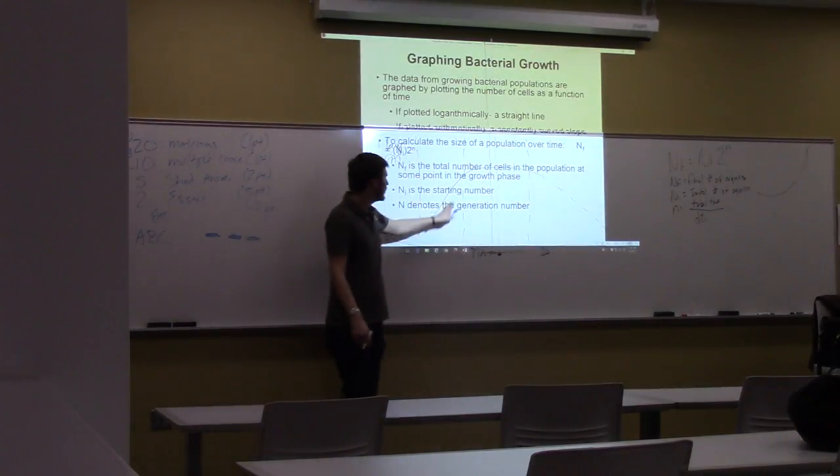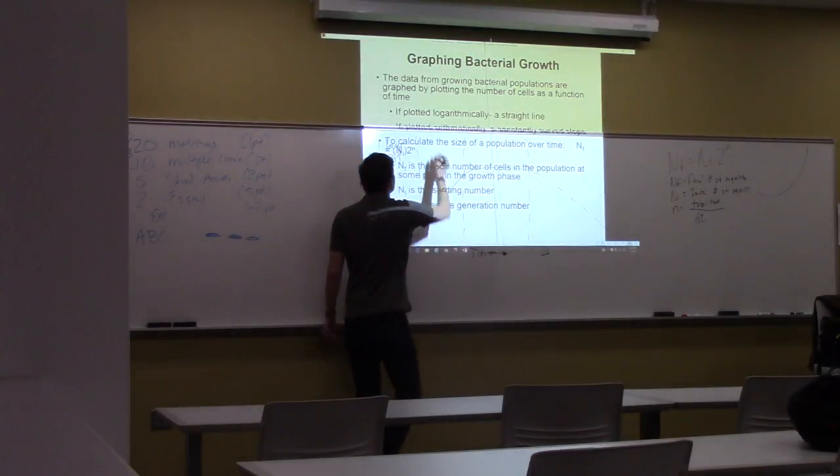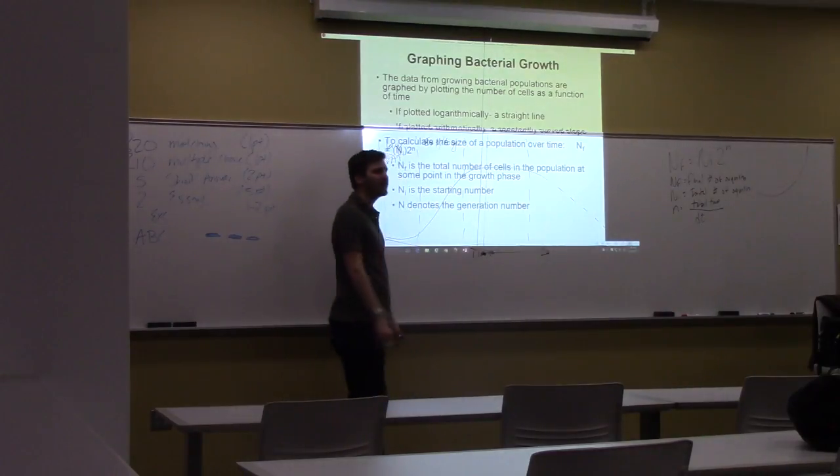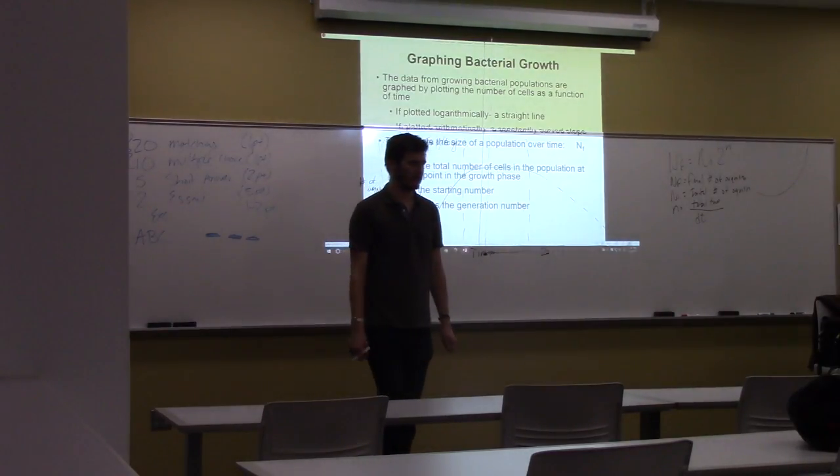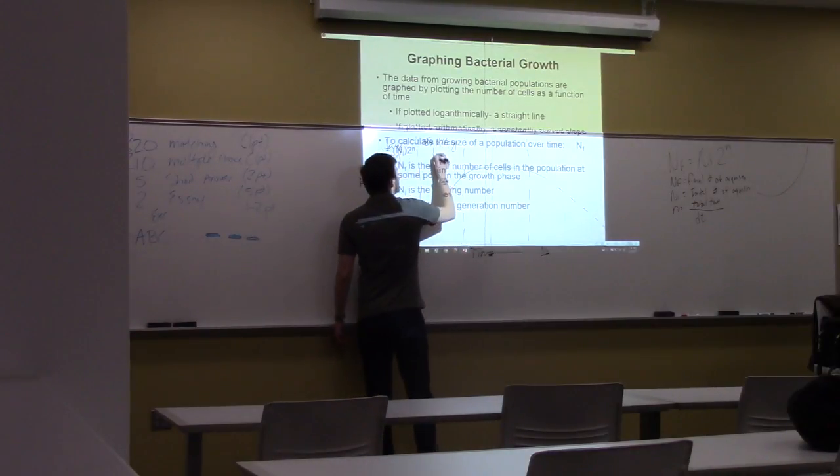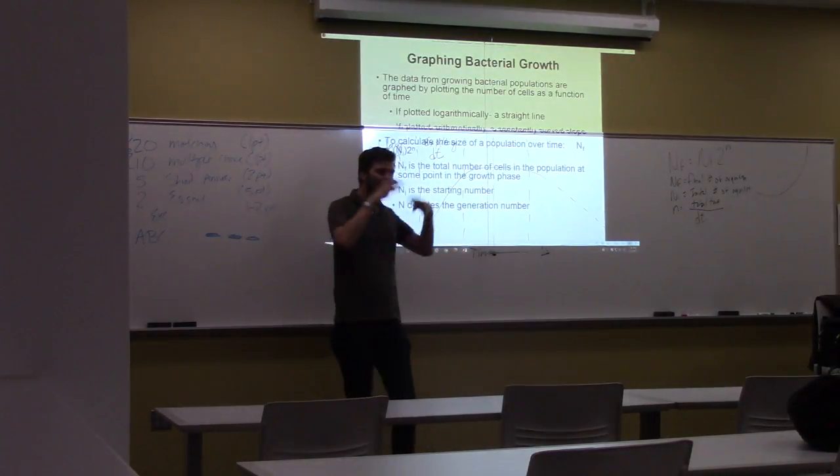What about this second curve? What's this called? Exponential or the log phase. And what's happening here? They're rapidly dividing at their true doubling time. Nutrients are plenty.